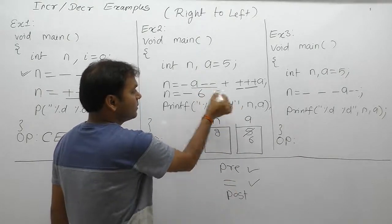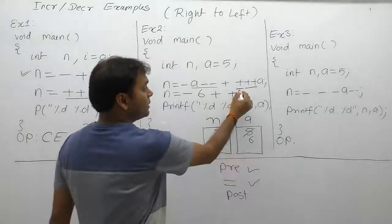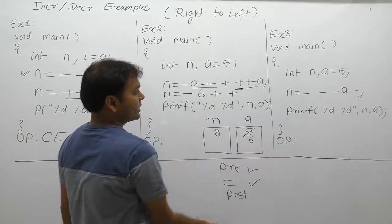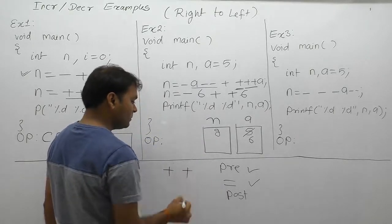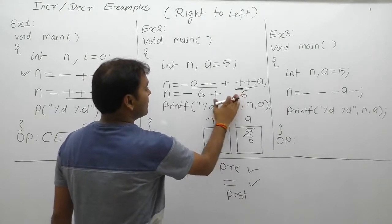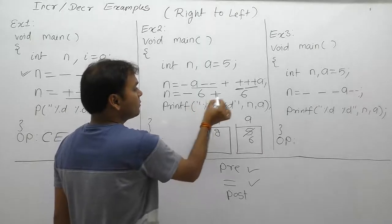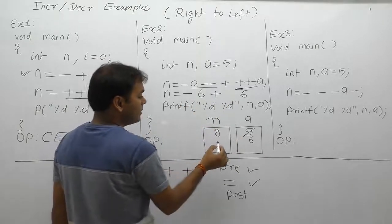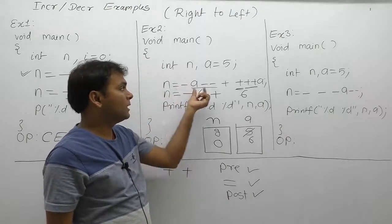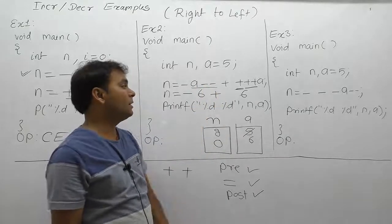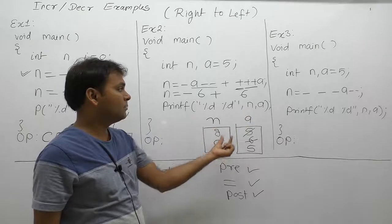Then assignment: replace all occurrences of a with current value of a which is 6. Then apply binary plus and unary plus operations. The result: -6 + 6 = 0. Finally, 0 is assigned to variable n, so n becomes 0. After that, post-operations: post-decrement on a, so a becomes 5 again. Final result: value of n is 0, value of a is 5.